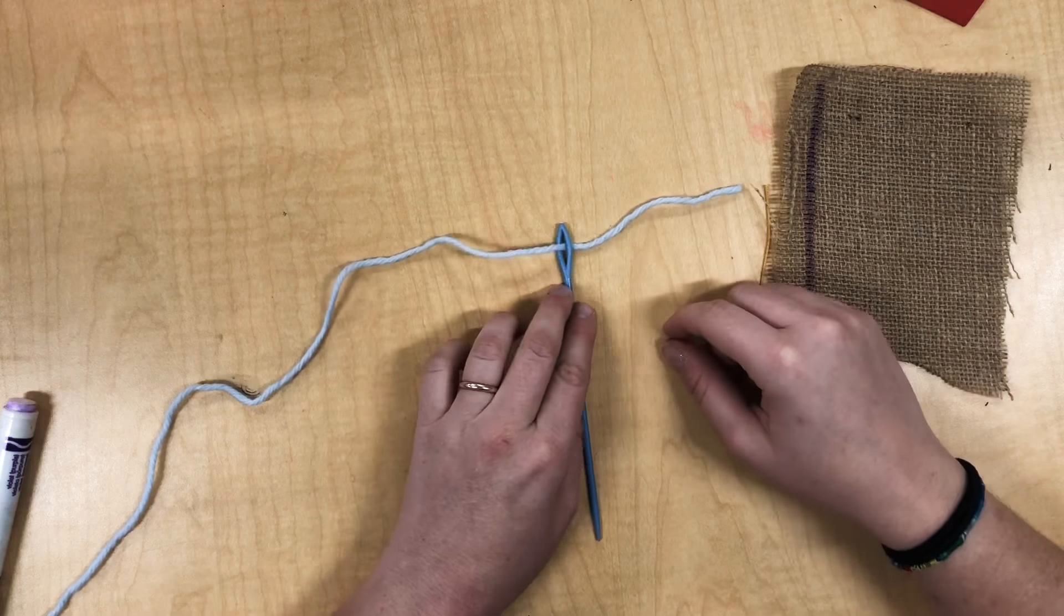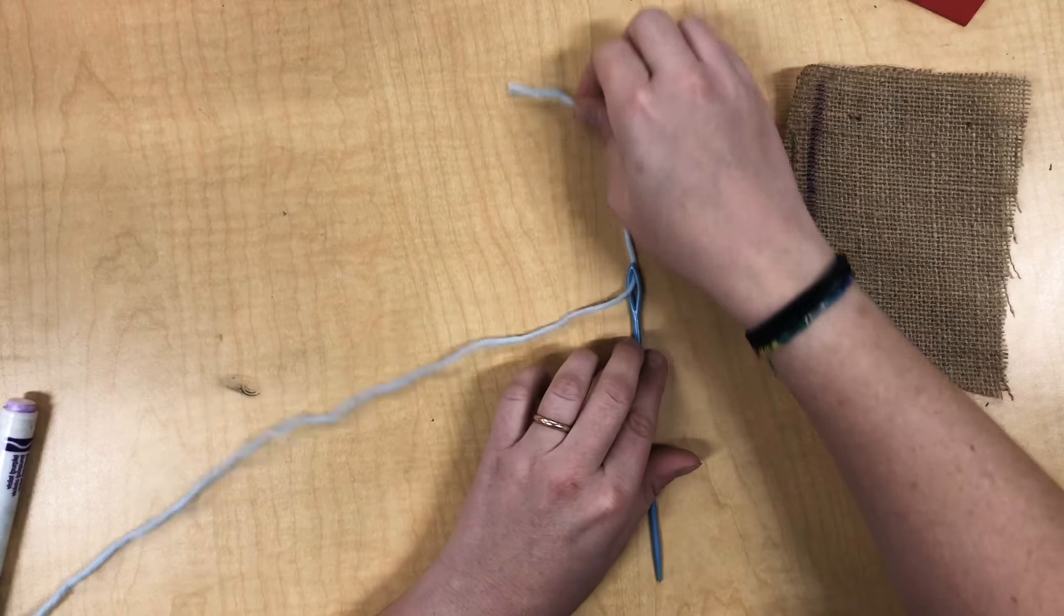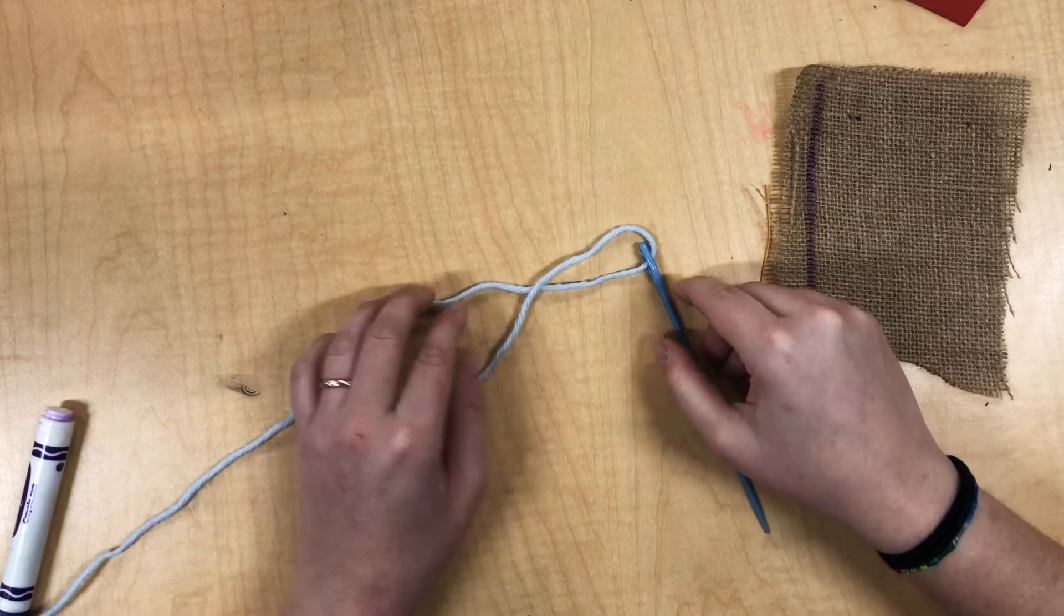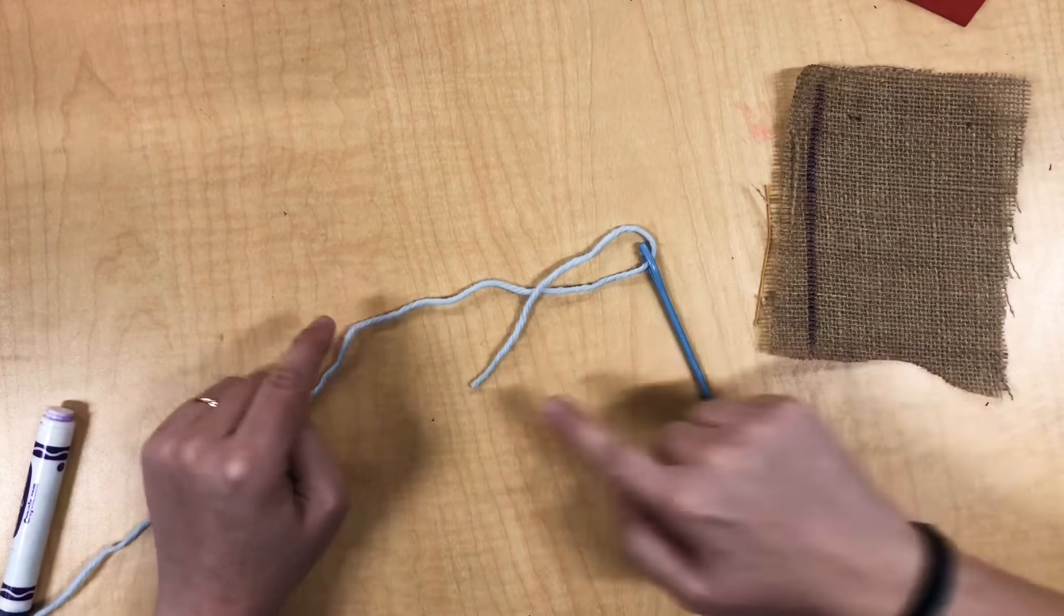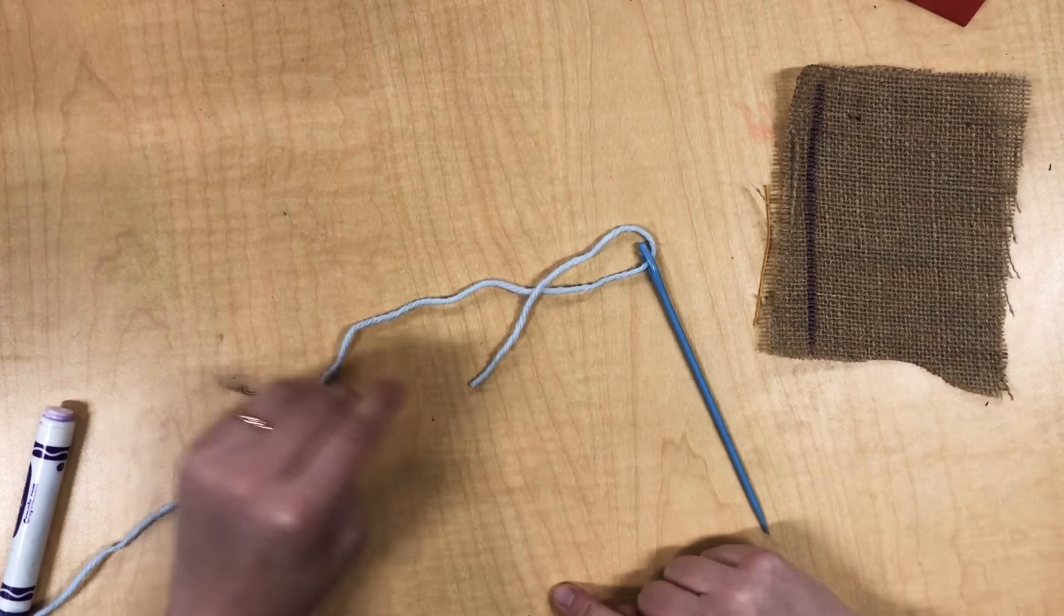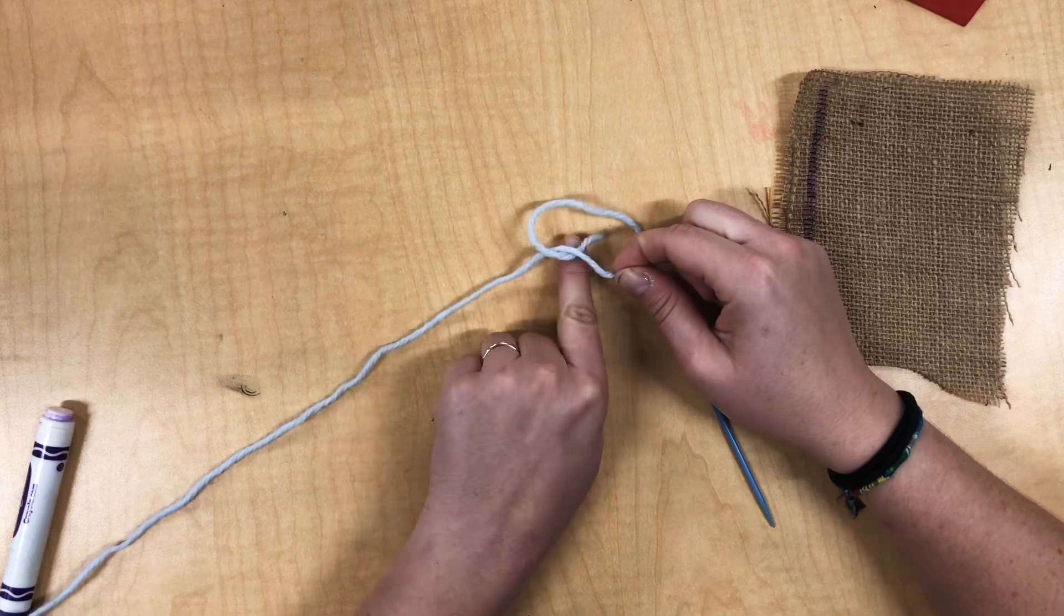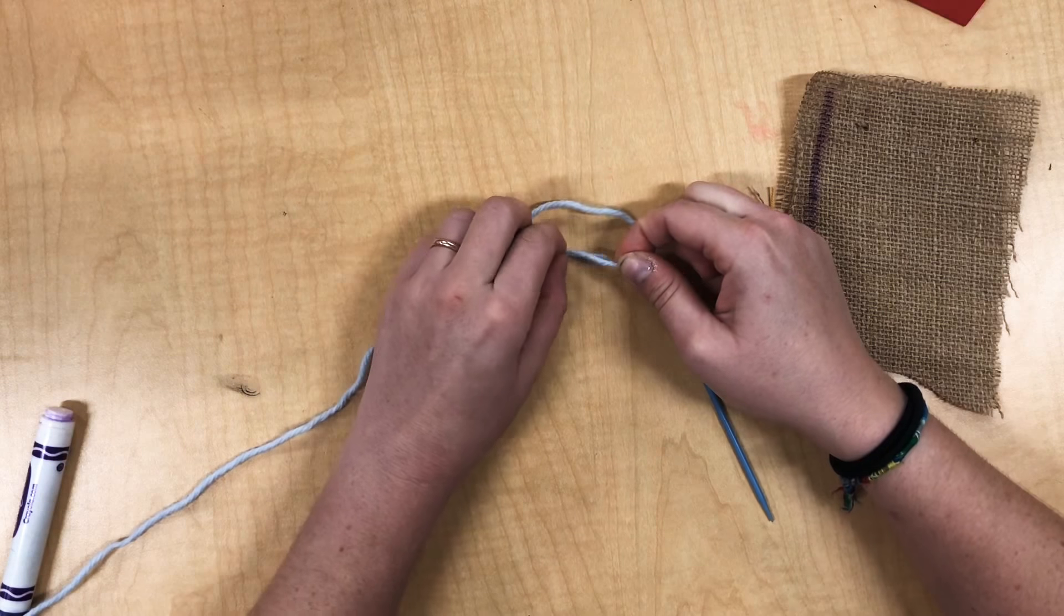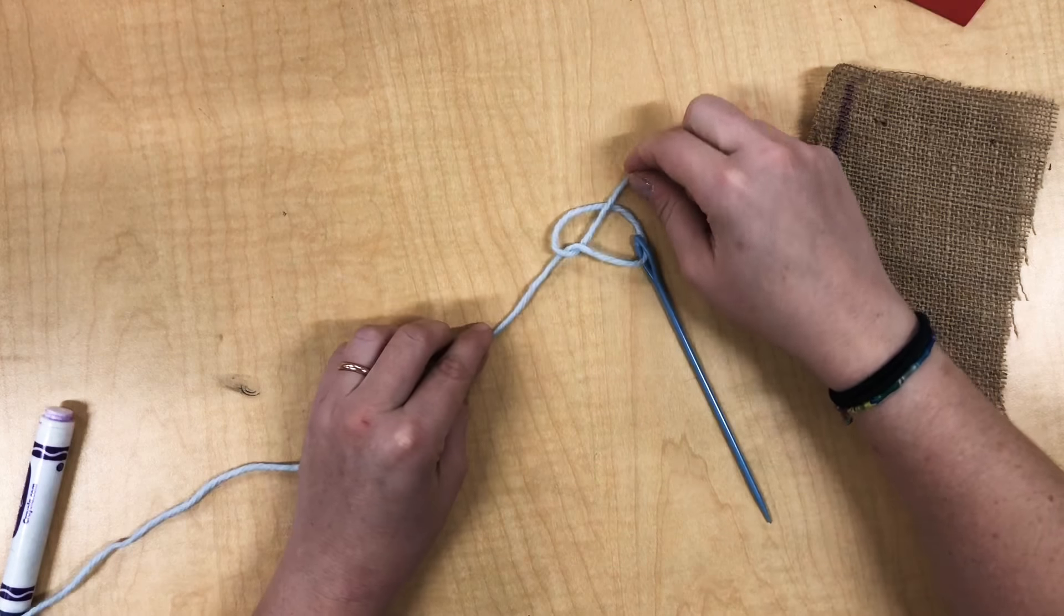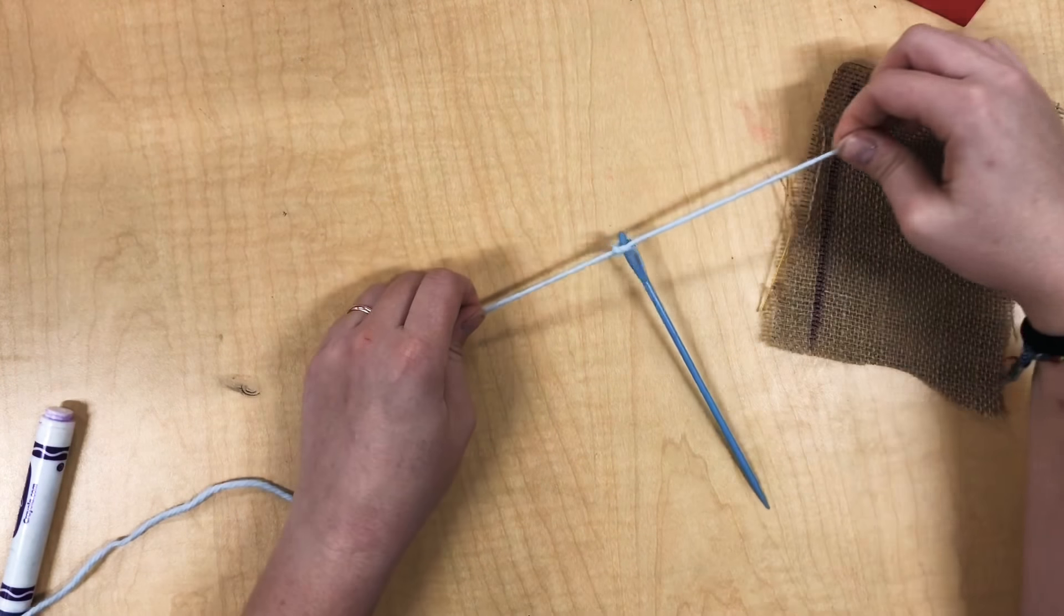Now I'm ready to tie a knot. So to tie a knot, I'm gonna take this string and turn it into a fish shape. See my fish? Then I'm gonna take the tail of the fish. It's gonna go under this one, then over the next one. Then I grab both ends and pull apart.